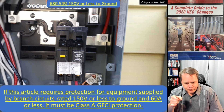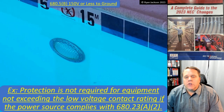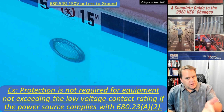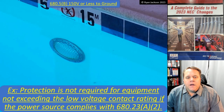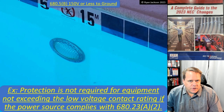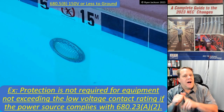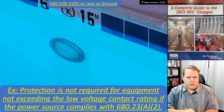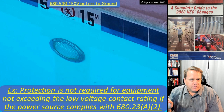So to read this one more time: if the circuit is 150 volts or less to ground and 60 amps or less, then you need Class A GFCI protection. Now looking at the photograph, if we have underwater swimming pool lighting, generally speaking that needs to be GFCI protected. However, the exception says protection is not required for equipment that does not exceed the low voltage contact rating per Article 100, if the power source complies with 680.23(A)(2). So if you have low-voltage lighting from a swimming pool isolating transformer with very limited energy output, you do not need GFCI. If the luminaire is 120 volts, you need GFCI; if it's below the low-voltage contact limit from a swimming pool transformer, then you don't.